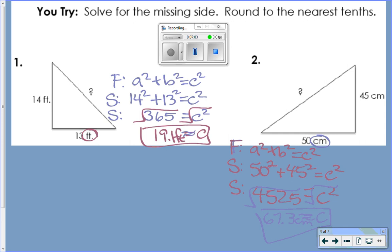And number 2, you were to write your formula: A squared plus B squared equals C squared. We're going to substitute our numbers in: 50 squared plus 45 squared equals C squared. Now we're going to solve. What is the sum of the squares? 4,525.